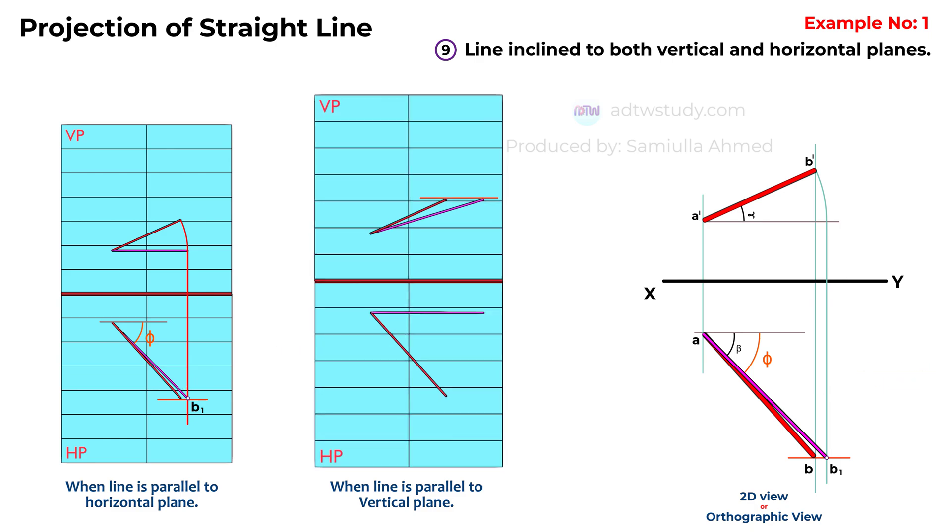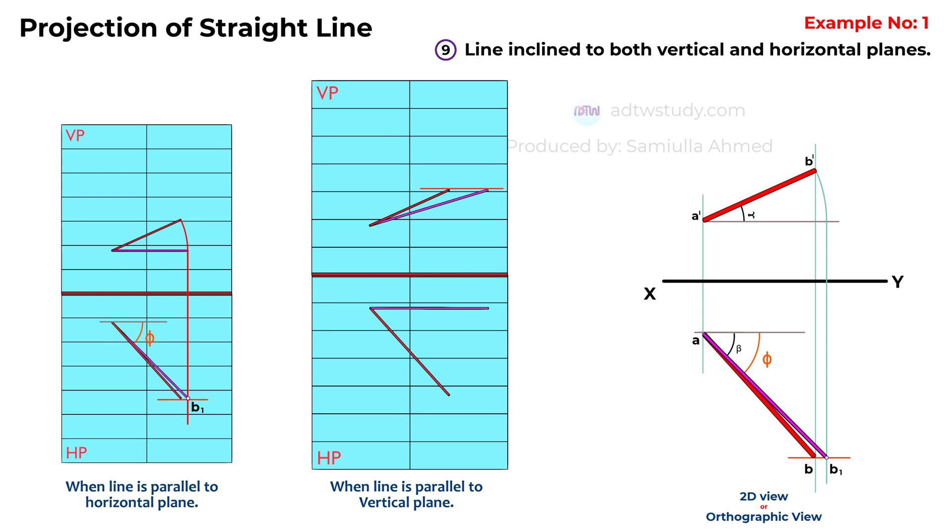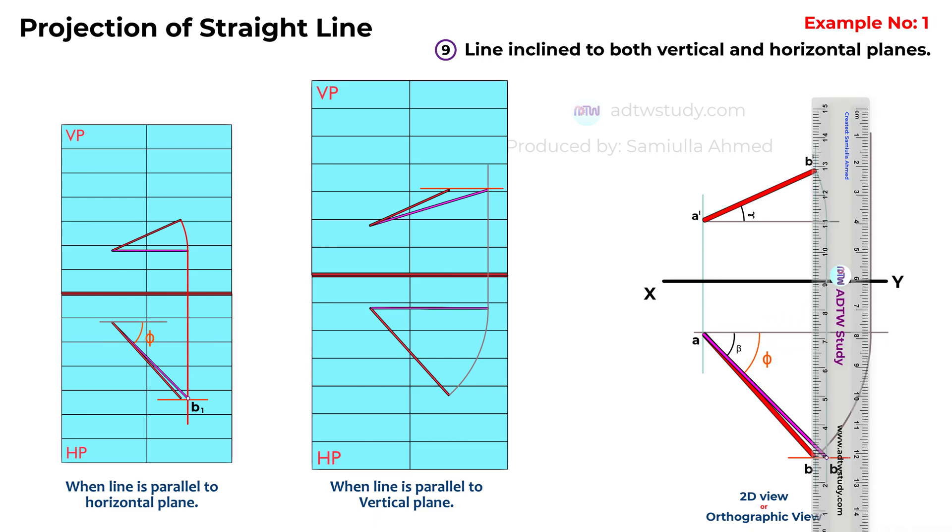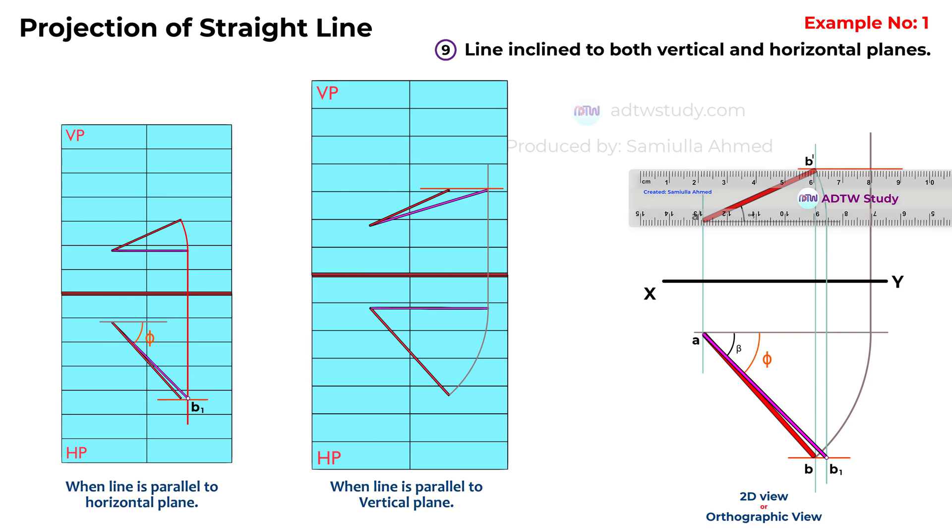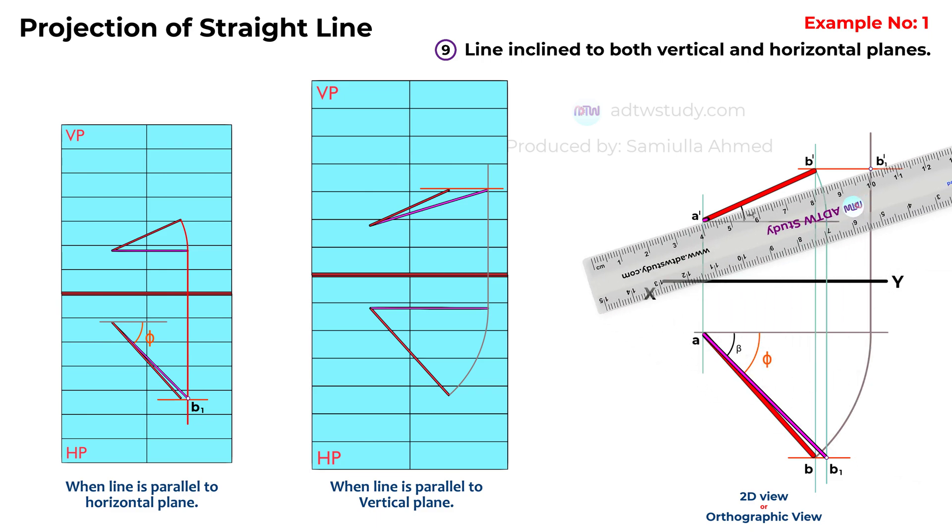For the true length when the line is parallel to the vertical plane, draw a horizontal line from the endpoint A. Adjust a compass to the length in the top view and draw an arc as shown. Extend it upwards to find the other end of the line. Draw a line from point A dash to this new point, which we'll call B1 dash. This shows the actual length of the line. The new angle it makes with the horizontal plane is represented by theta.